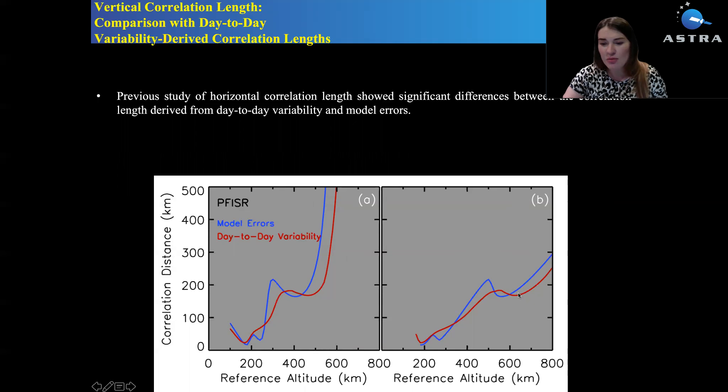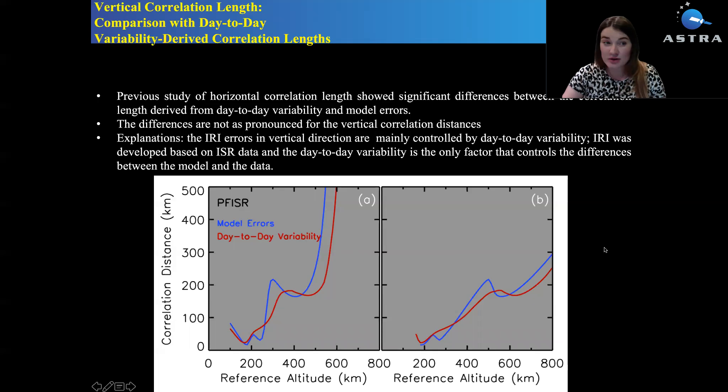The shapes are pretty close to each other. I guess this assumption that day-to-day variability can be used as a proxy for a correlation matrix construction holds true for the vertical component of this matrix. This can be one reason why this is true is that the IRI model was based on incoherent scatter radar data. The day-to-day variability is the only factor that controls the model errors at the radar sites.